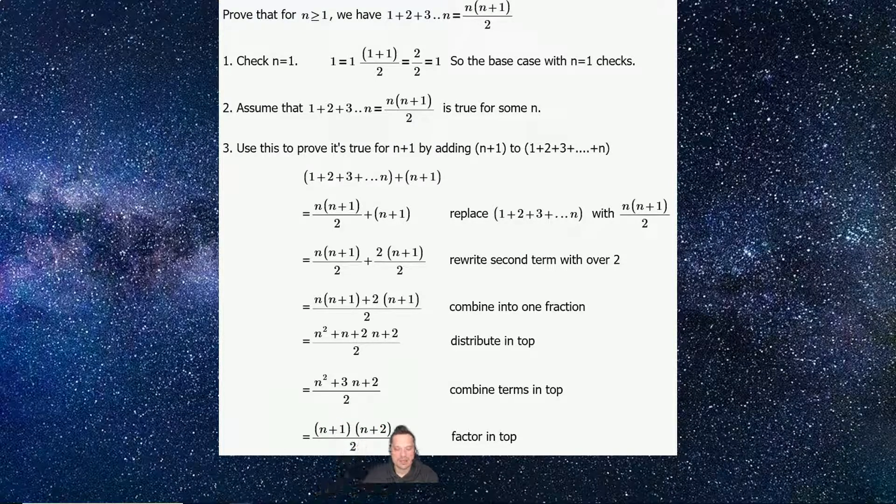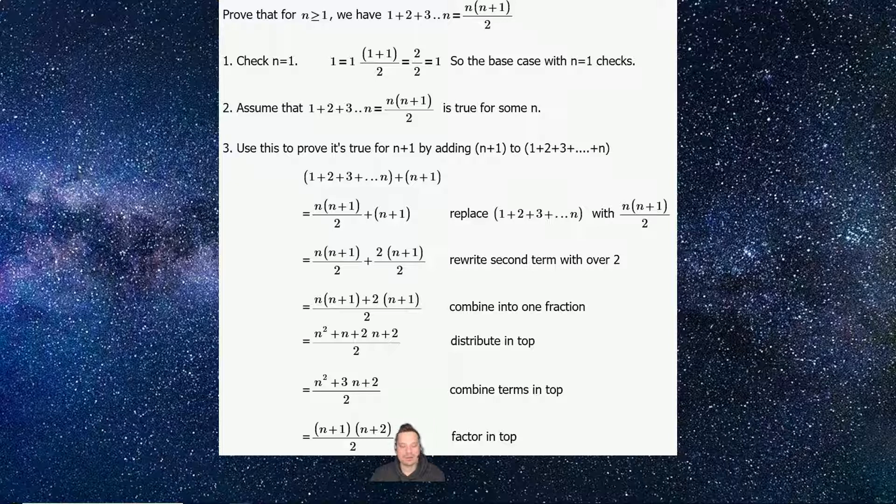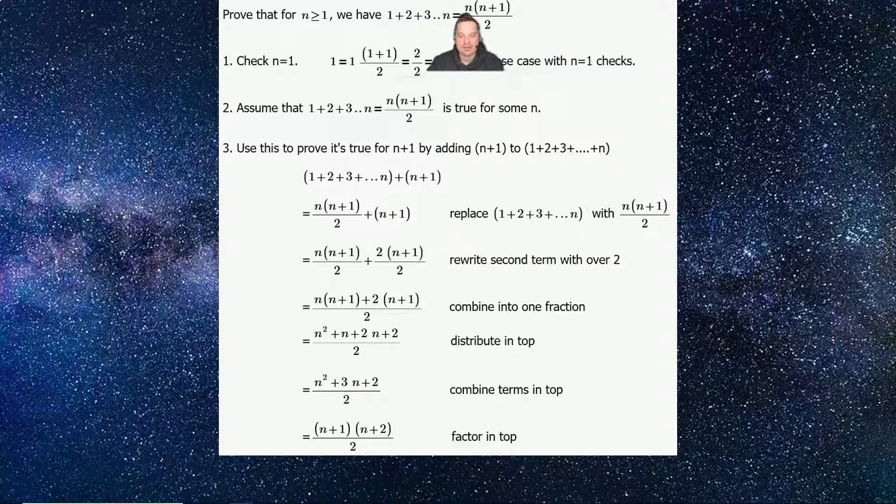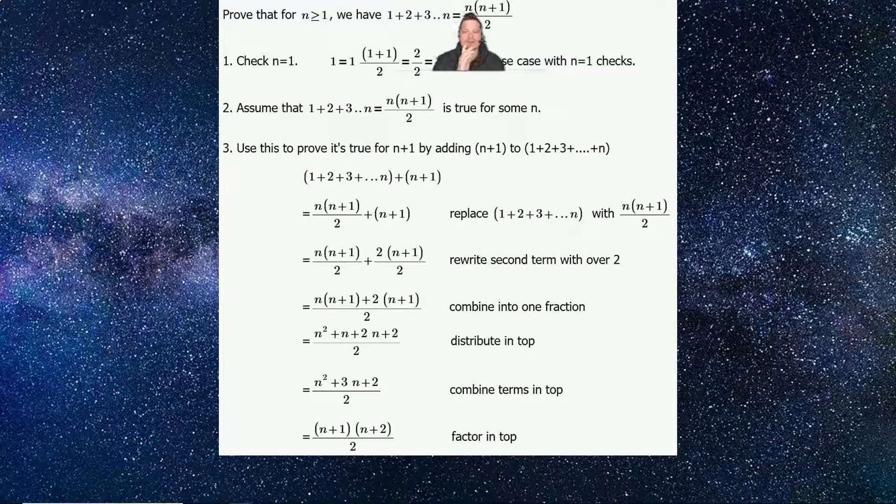And this basically proves that our formula works for n plus 1 also. Why is that the case? It's not obvious as we're looking at this last step, to be honest. Well, the reason is, you see, this is n plus 1. So go back to the top, all the way to the top. You see, right there, the formula. At first, all you have is n, right above my head. You just have n. But now with this new one, what you have above my head is n plus 1.